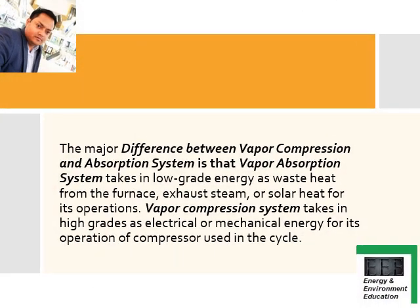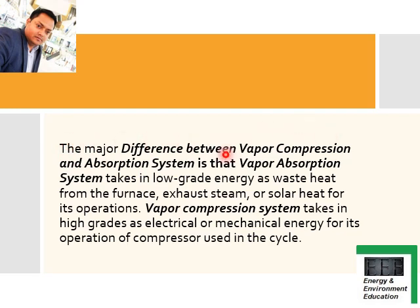As a short answer type question, the major difference between vapor compression and vapor absorption systems is that the vapor absorption system takes in low-grade energy — such as waste heat from a furnace, exhaust steam, or solar heat — for its operation. If asked as a long answer type question with more marks, you need to explain this major difference along with other applicable differences between the two systems.